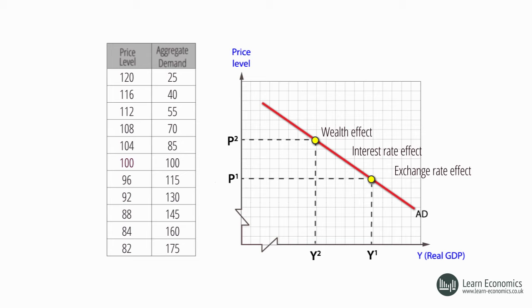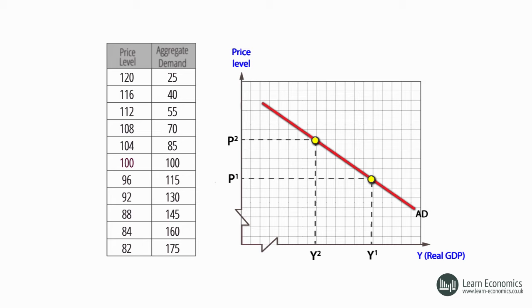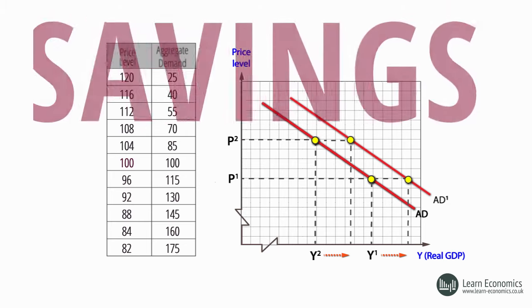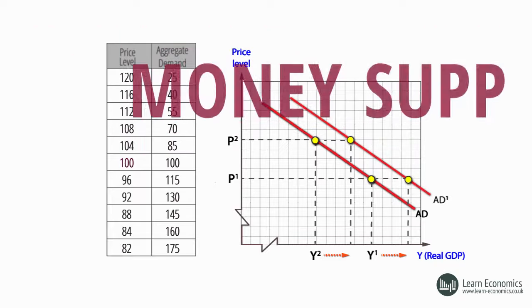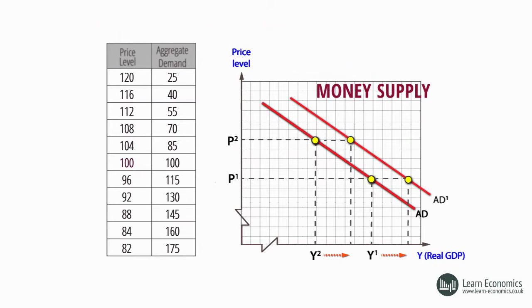If we now hold the price level constant, these effects are put on hold, and other factors come into play which shift the whole position of the AD curve. Shifts from changes related to consumption include changes in decisions to save, changes in confidence levels and expectations, and changes in the quantity of money or availability of credit. For example, decisions to save more will result in a shift to the left in the AD curve.